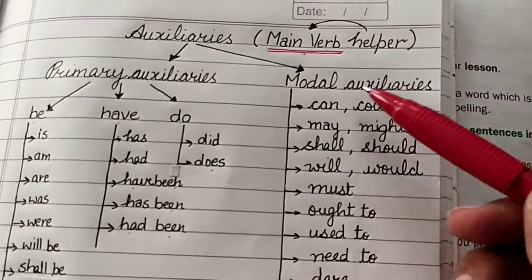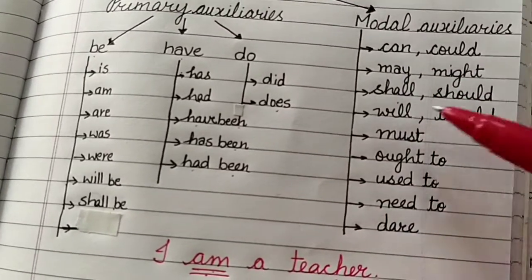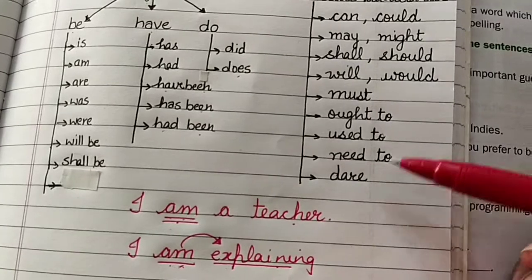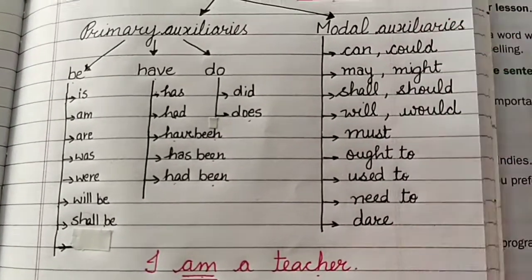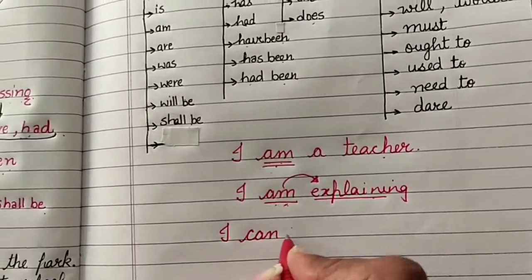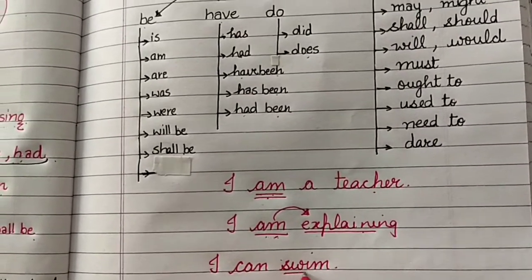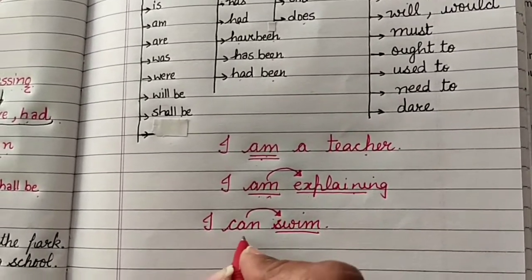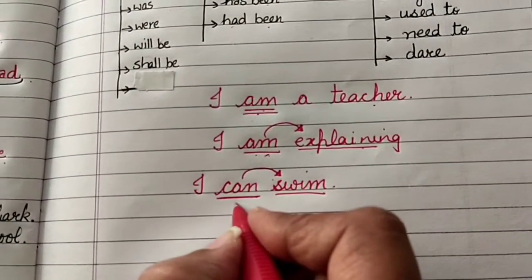And if I look at modal auxiliaries. Can, could, may, might, shall, should, will, would, must, ought to, used to, need to, dare. These are certain verbs. They are also verb helpers. For example, when I say I can swim. Now, the main action is swim. Can is working as a helper to the main action swim. So that is why can is the auxiliary.